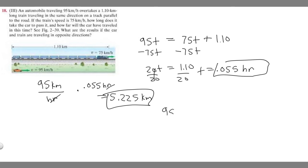So we have 95t. This is going to be traveling in the opposite direction now, so we're going to set this to negative. So minus 75t. Then it's the same exact thing, plus 1.10.